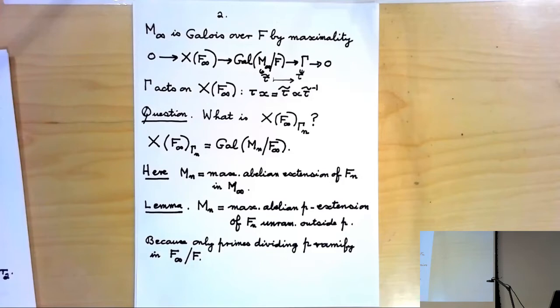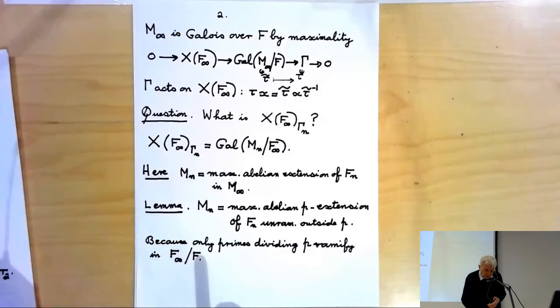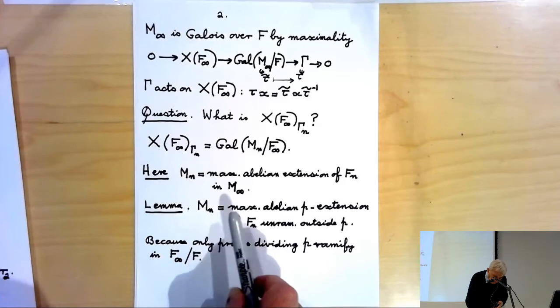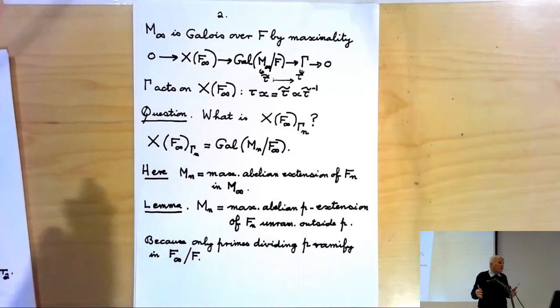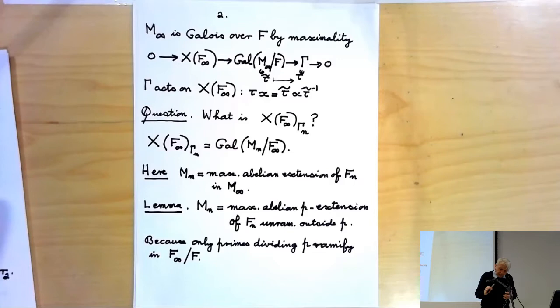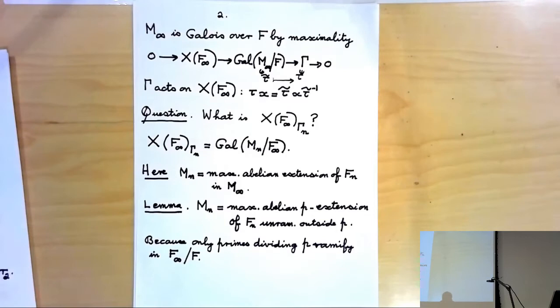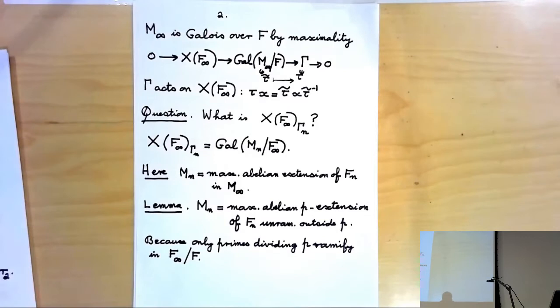When we come in the last lecture to look at the unramified analog of this, that will no longer be true. But here, a moment's reflection tells you that M_n is the maximal abelian P extension of F_n unramified outside P — you can forget the F∞ if you like. This is simply because the only primes which can ramify in F∞ over F must divide P, and the Galois group we're looking at is the maximal extension unramified outside P.